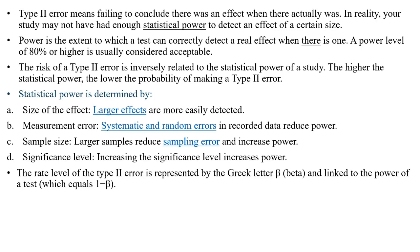Measurement errors — systematic or random errors in recorded data can reduce statistical power. Regarding sample size, the larger the sample, the smaller the standard error, which increases power and reduces Type 2 error. The statistical power of a test is represented as 1 minus beta.